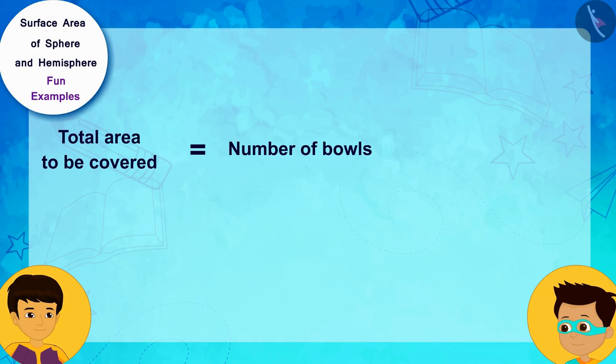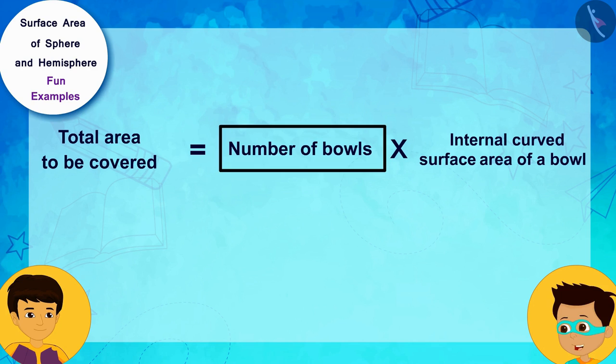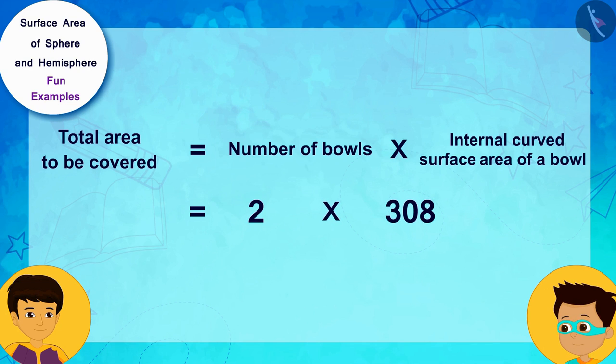That's right. And, you have two such bowls. This means, you have to get a total area of 2 times 308, that is, 616 square centimeters.